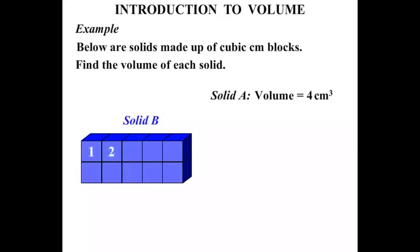1, 2, 3, 4, 5, 6, 7, 8, 9, 10. So we would say that solid B has a volume equal to 10 cm³.